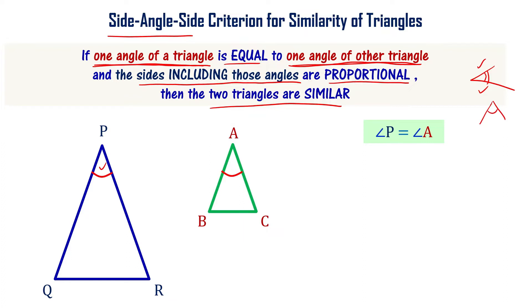These two sides include this particular angle. In this case, the sides including angle P are PQ and PR, and the sides including angle A are AB and AC. If these sides are proportional, then the two triangles are similar.